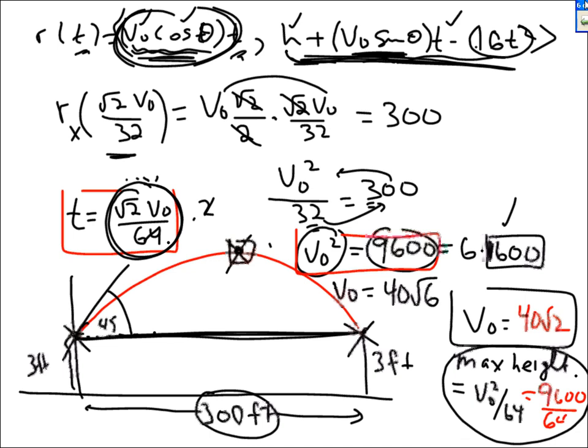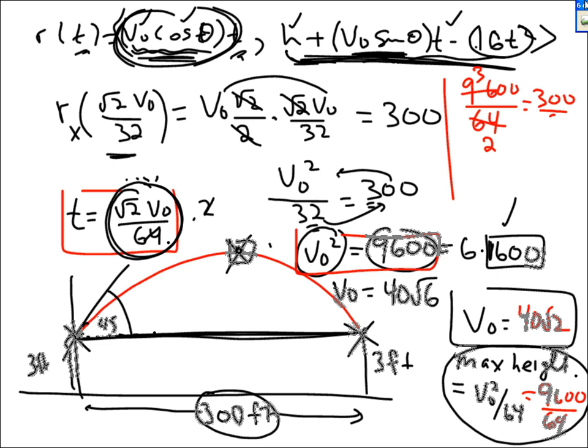The max height is v₀²/64 = 9600/64. Since 32 goes into 9600 300 times, and into 64 twice, that gives 300/2 = 150. The maximum height is 150 feet. That completes the section on velocity and acceleration — good luck with it, you can do it!